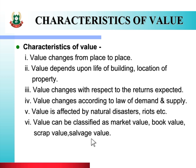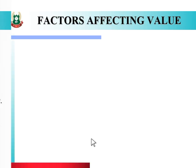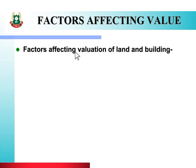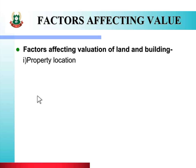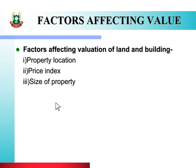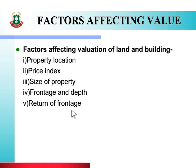Now let us look at the factors affecting valuation of land and building. First is property location. Second is price index. Third is size of property. Fourth is frontage and depth — meaning the property facing the road. Fifth is return of frontage, meaning development of property. Sixth is nature of soil. These are the various factors which affect the valuation of land and building.